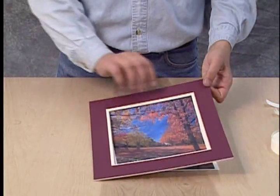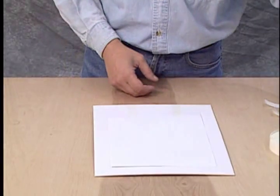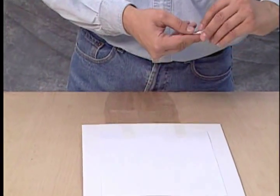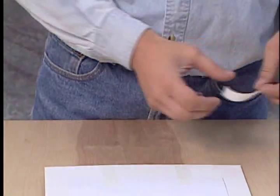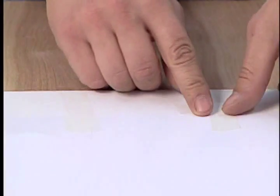Next, each tab of tape is crossed with an additional tab of tape to form the shape of the letter T. These additional tabs greatly reinforce the hinges.